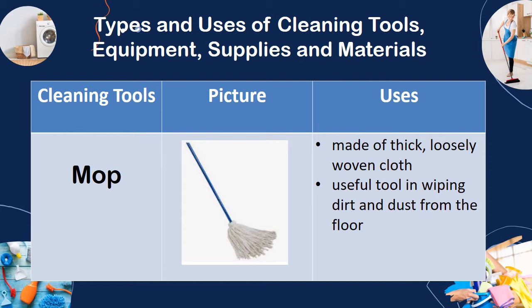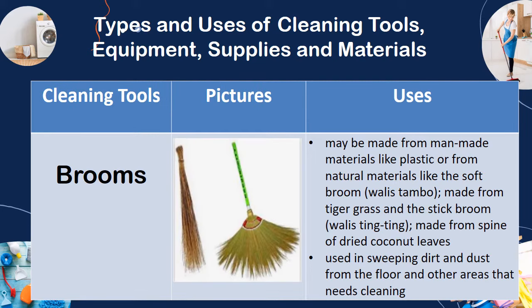The mop. It is made of thick, loosely woven cloth. It is a useful tool in wiping dirt and dust from the floor. The broom may be made from natural materials like the soft broom or walis tambo, made from tiger grass, and the stick broom or walis ting-ting, made from the spine of dried coconut leaves. It is used in sweeping dirt and dust from the floor and other areas that need cleaning.